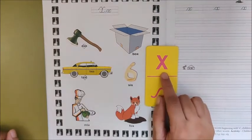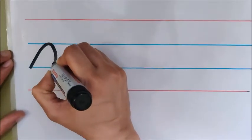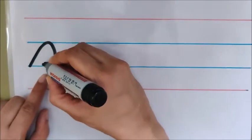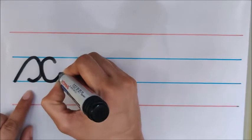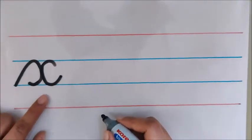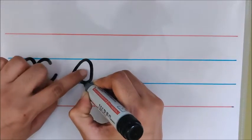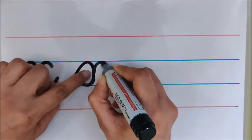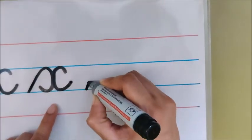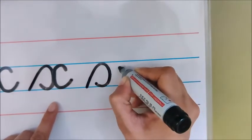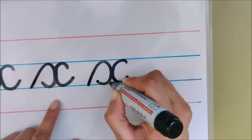Now let us see the formation of X in lowercase cursive. From the blue line, you have to go up, go down, touch the blue line. Now again go back on the same line, touch the blue line again — down and C. This is letter X. Let us see one more time: go up, down, come back on the same line, touch the blue line, down and make C. Don't make X like this — this is wrong. You lifted your pencil to make C, that is wrong. You have to make it in one go. And also, if you do not come back on the same line, your X will become wrong. The correct formation of writing letter X is this.